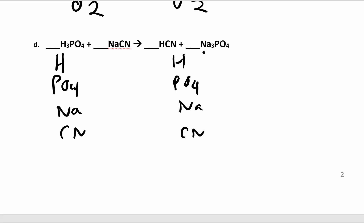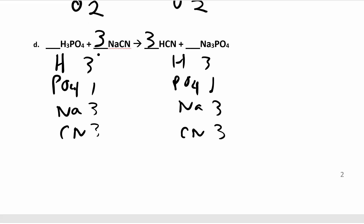So I have H, PO₄, sodium, and cyanide. I have three sodiums here, so I'll put a three on this side. That changes it to three cyanides, and so if I come over here and put three cyanides, I have three hydrogens and three cyanides. I have three sodiums and one phosphate. And then I already have three hydrogens over there and one phosphate. I checked and I could see that I have three hydrogens, one phosphate ion on each side. So you're all balanced.